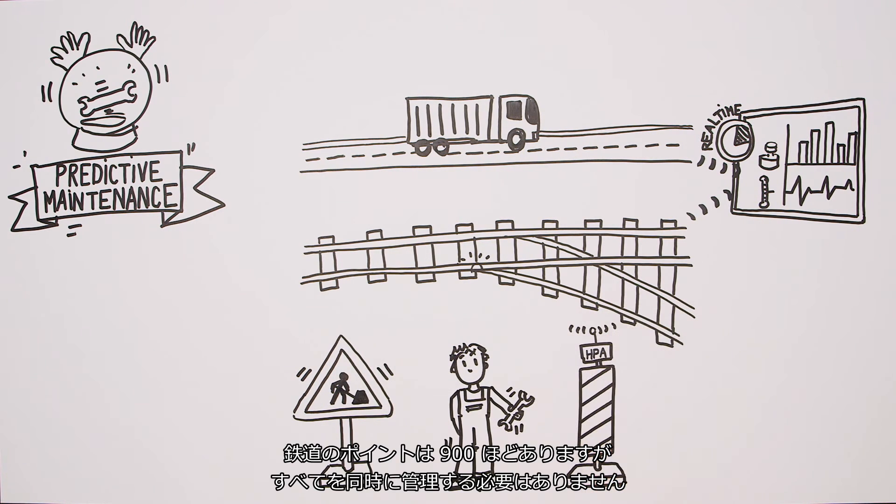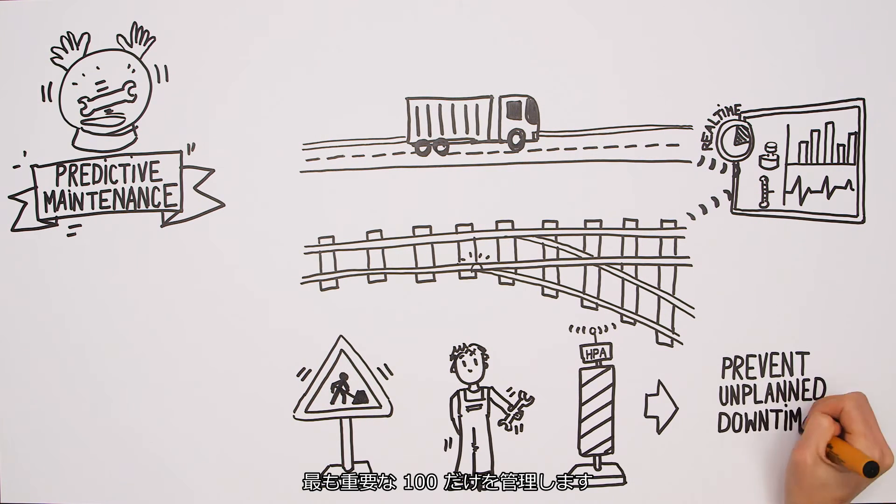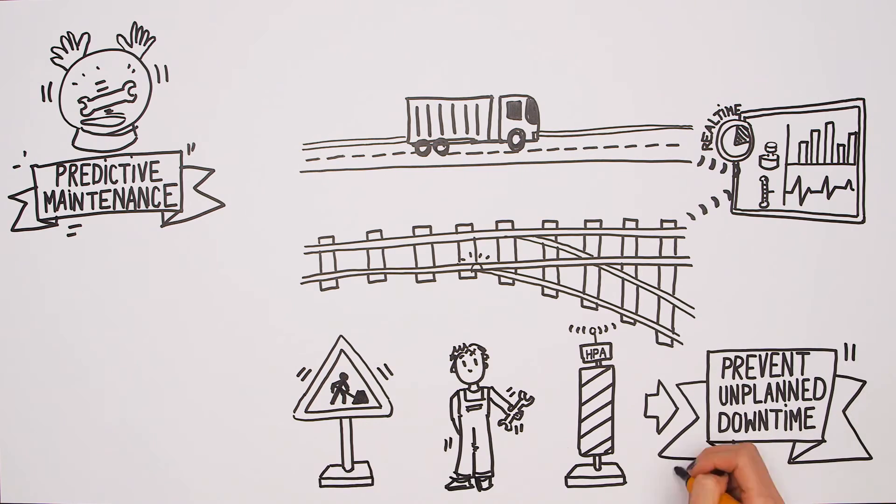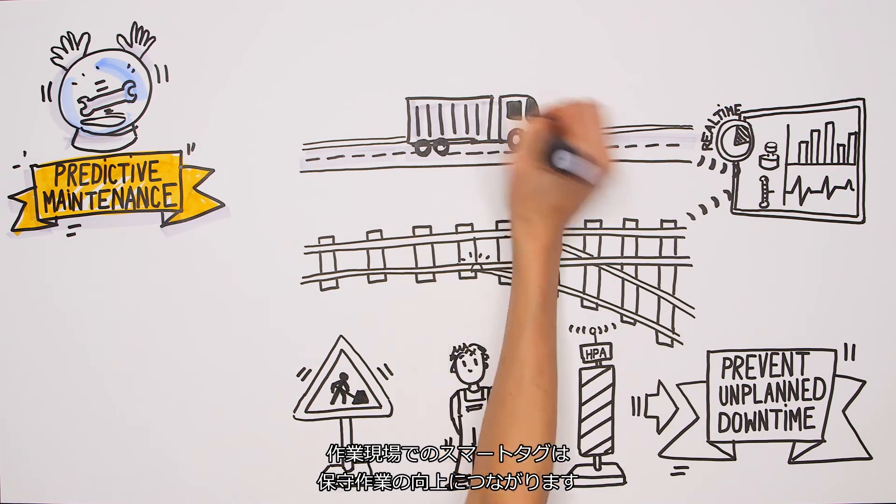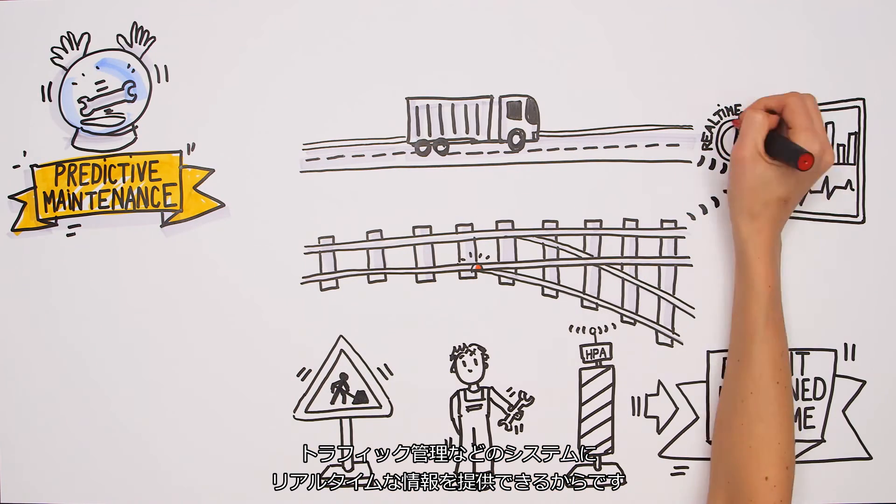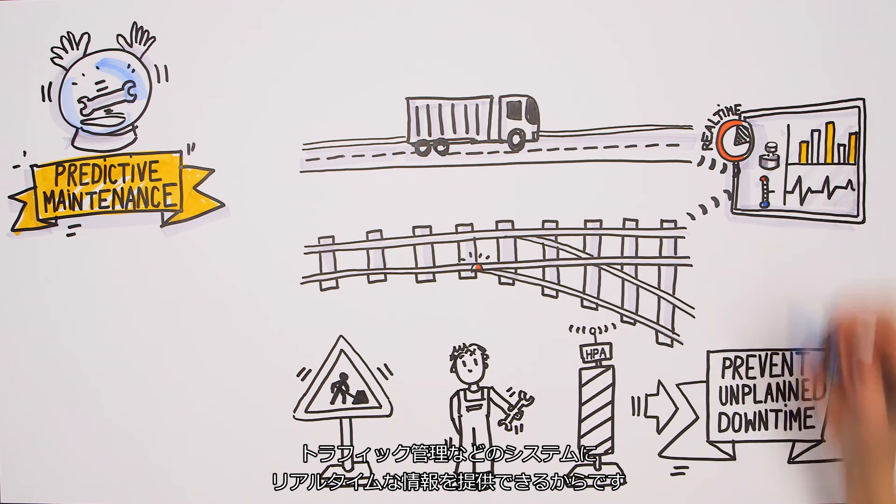The team does not need to maintain all 900 railway points at the same time, but only the most critical 100. Smart tagging of the construction areas improves the maintenance work by providing real-time information to traffic control and other relevant systems.